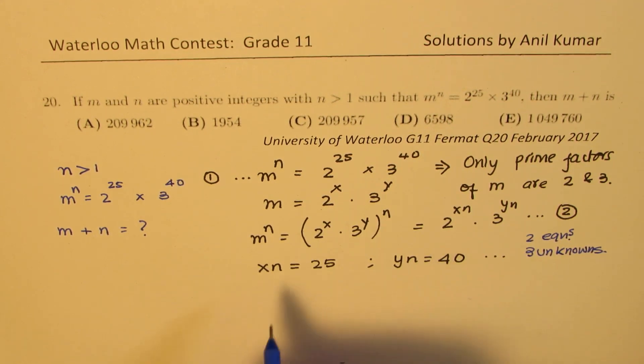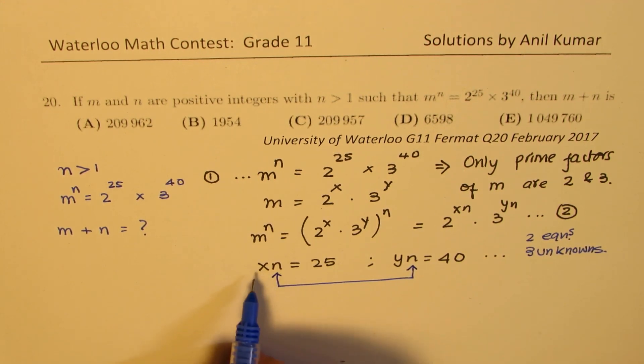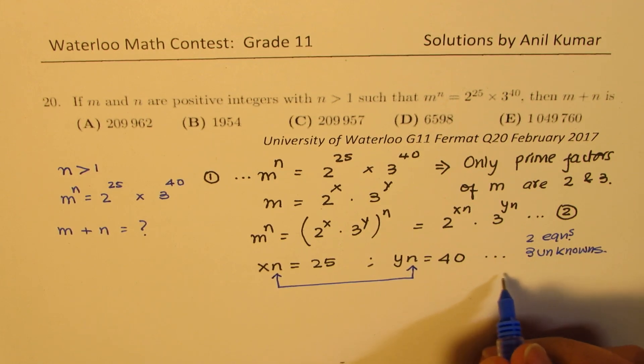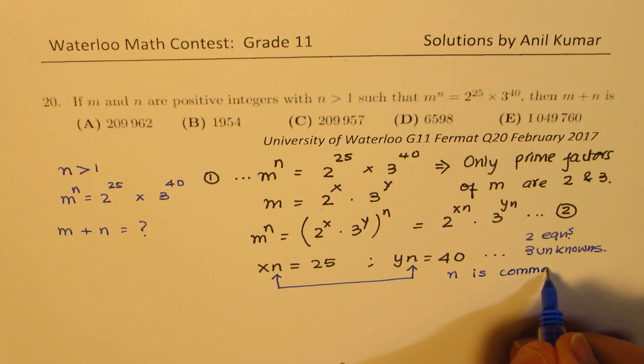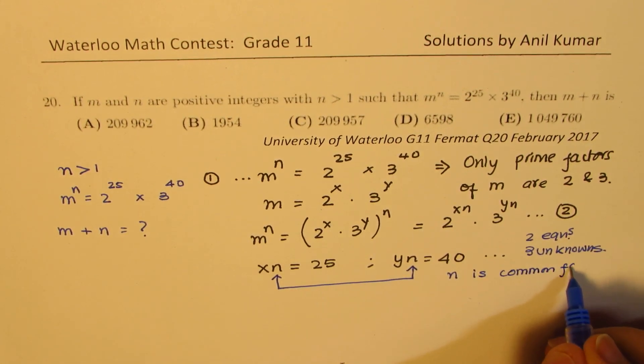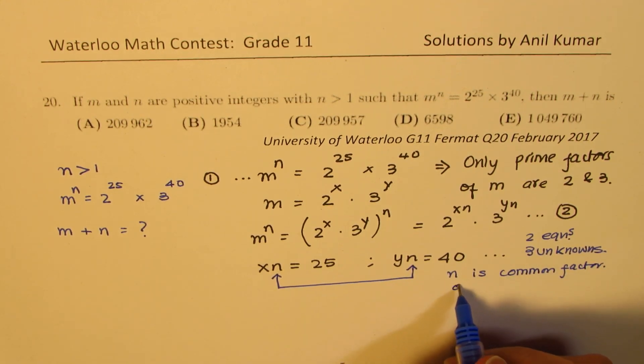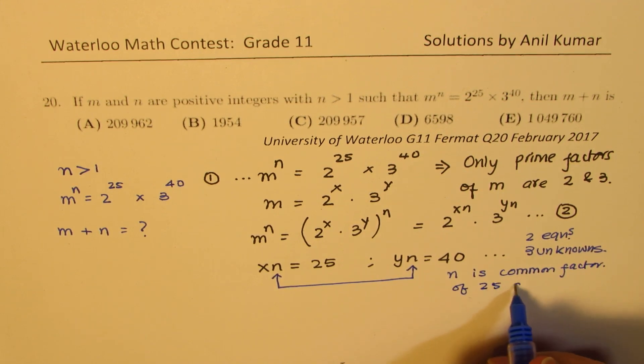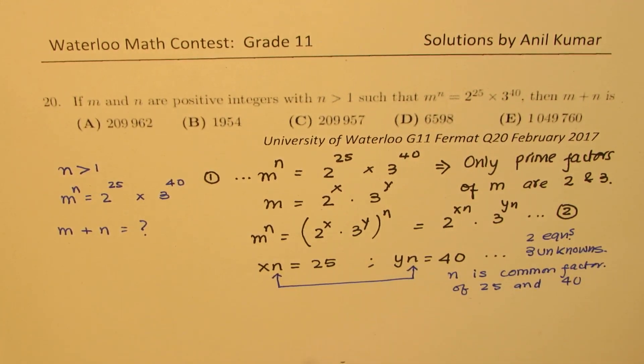So interesting condition here is that we have n as a common factor. So in xn and yn, we have n is common factor of both these terms. So let's find the common factor of 25 and 40. That should be n. So n is a common factor of 25 and 40, since x times n is 25 and y times n is 40. So n is a common factor.